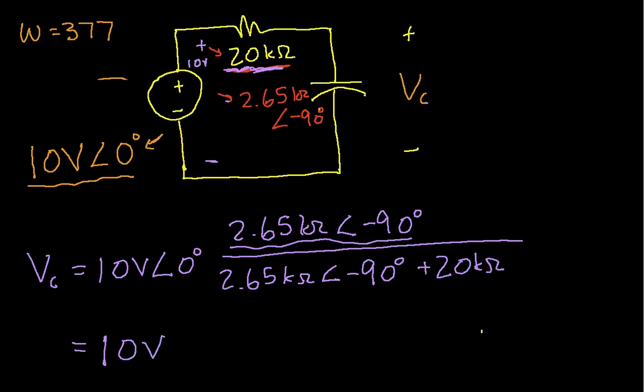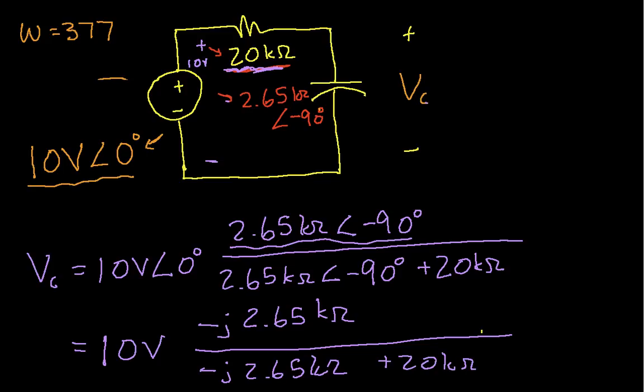So 10 volts at an angle of zero is just 10 volts. 2.65 k ohms at an angle of minus 90 degrees is minus j 2.65 k ohms, minus j 2.65 k ohms plus 20 k ohms.